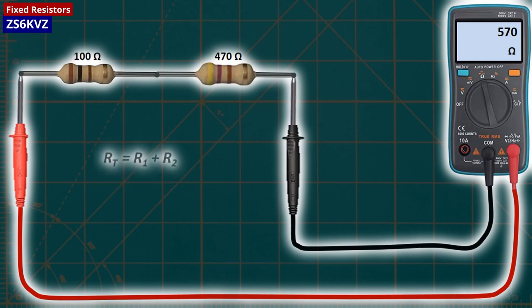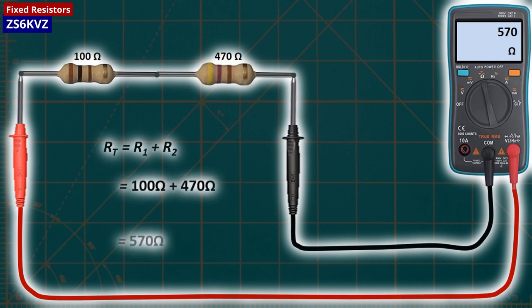Of course, fixed resistors have a certain positive and negative tolerance value, so the actual value may be lower or higher.